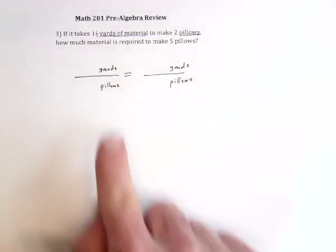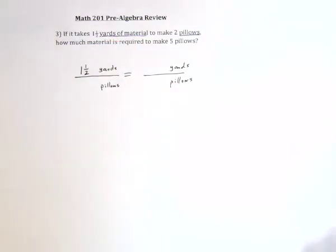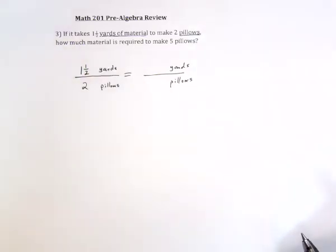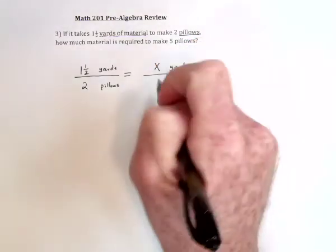Now, start filling in the information. So one and a half makes two pillows. How much material, so this I don't know, I'll use x to make five pillows.